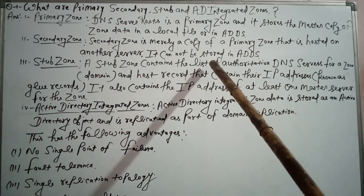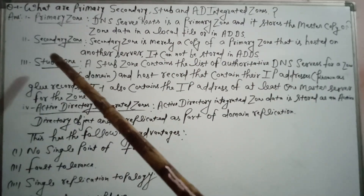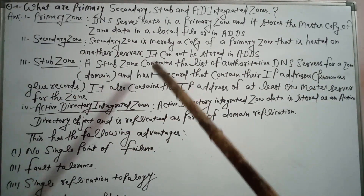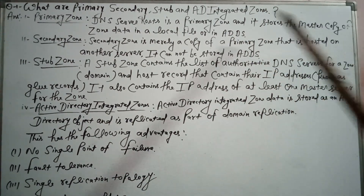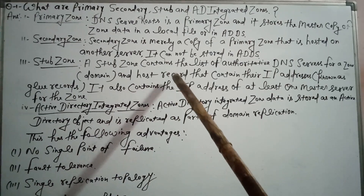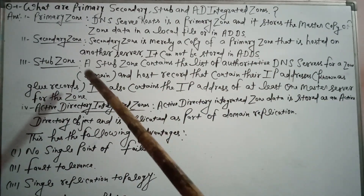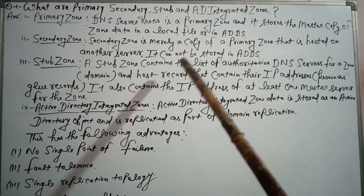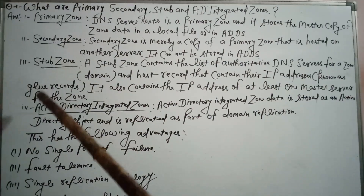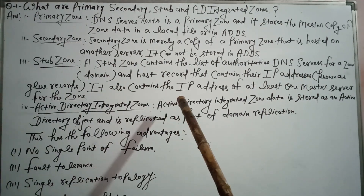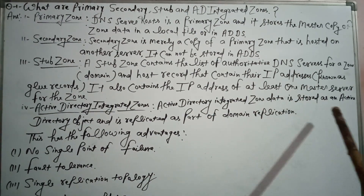The secondary zone cannot be stored in Active Directory. Number three: Stub zone. A stub zone contains the list of authoritative DNS servers for a zone domain, and host records that contain their IP addresses are known as glue records. It also contains the IP address of at least one master server for the zone.